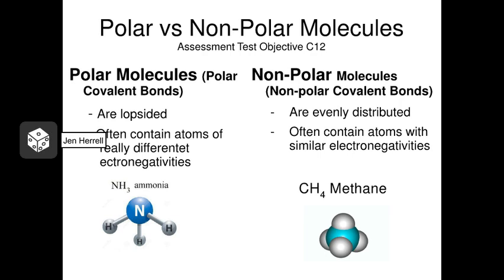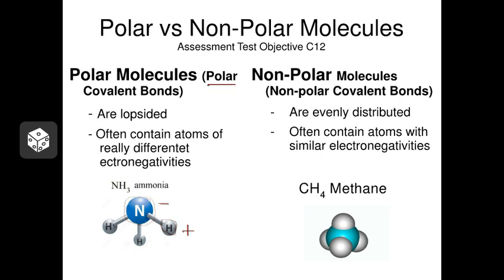Here's an example of a polar and a nonpolar molecule. Ammonia has a big nitrogen sharing with three little hydrogens. The nitrogen will hog those electrons most of the time, giving it a slight negative charge while the hydrogens have a slight positive charge — that's a polar molecule containing polar covalent bonds. On the right, methane or CH4 is a nonpolar molecule: carbon shares with four hydrogens distributed around it pretty equally, and because carbon isn't particularly electronegative, they share electrons evenly — we call this a nonpolar molecule with nonpolar covalent bonds.